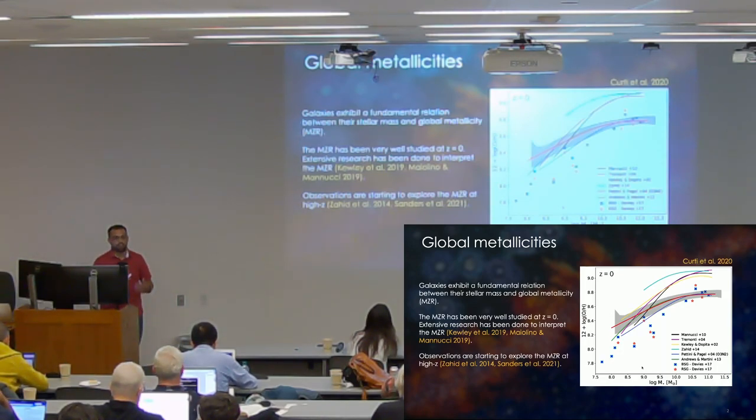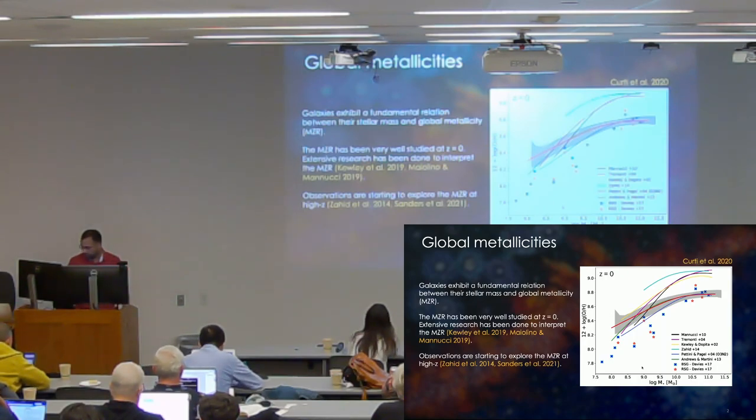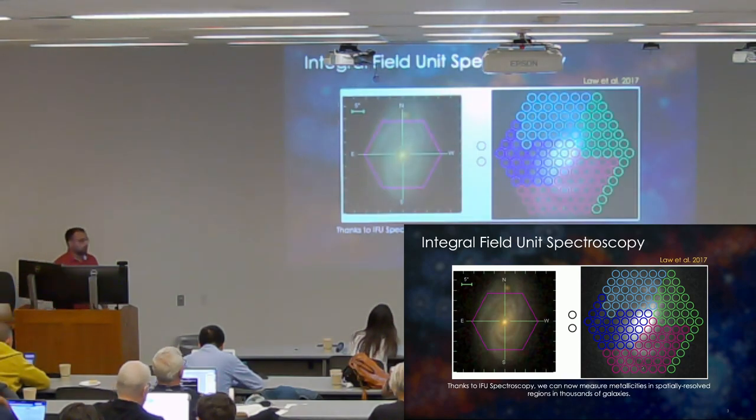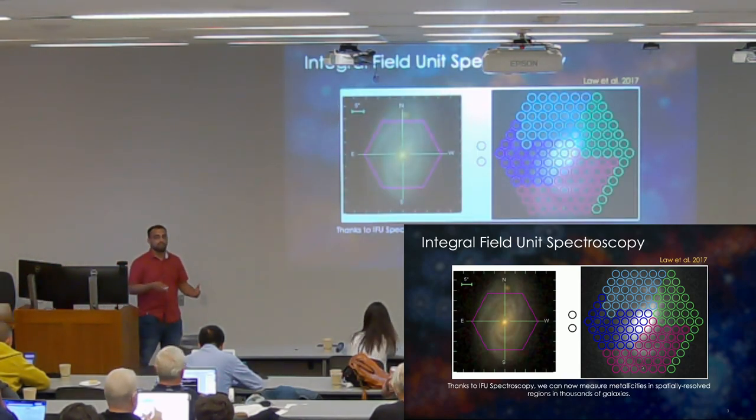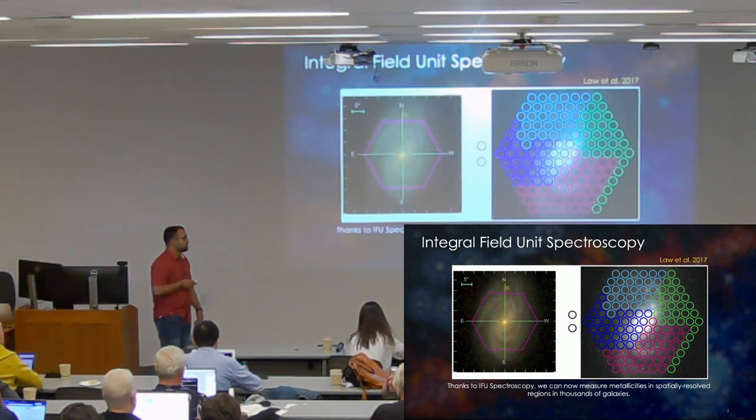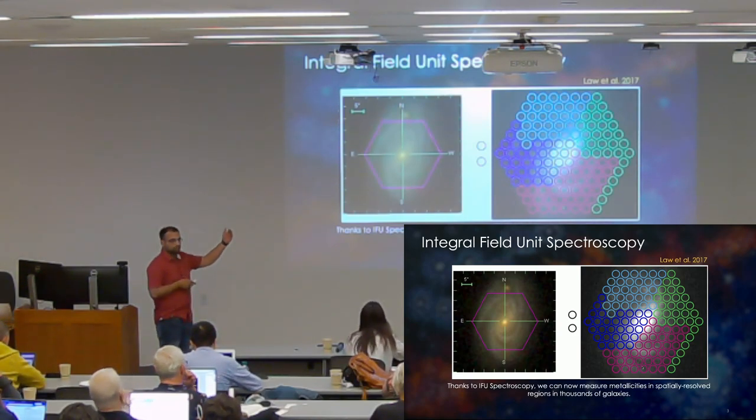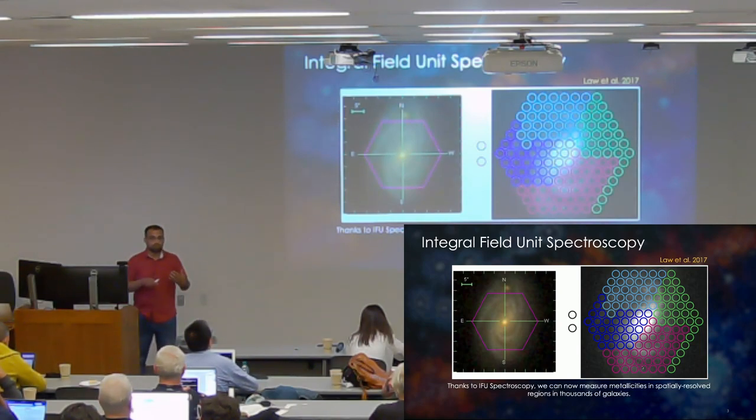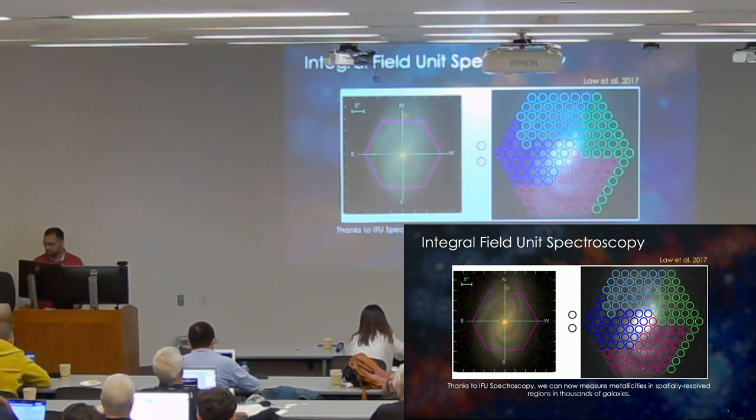There's been a lot of research already done to interpret the physical drivers of the mass-metallicity relation and what it means for galaxy evolution. And now we're also starting to explore this at higher redshifts. Particularly with JWST, we have been seeing the MZRs go all the way up to redshift eight or nine. But thanks to IFS or IFU spectroscopy, instead of getting one particular integrated spectra from a galaxy, we can now place different apertures on different parts of the galaxies and get spectra for each of these parts. So we can try to build our picture of galaxy assembly in a spatially resolved way using metallicities.